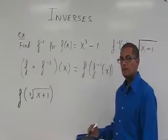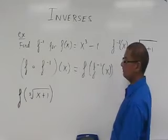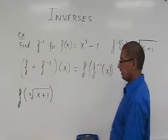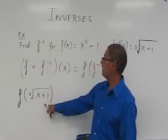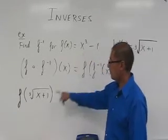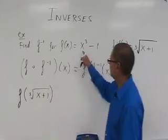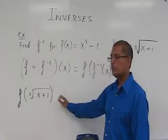Well we are going to have f of the cube root of x plus 1 because that is the inverse function, cube root of x plus 1. And what that says now is substitute this cube root of x plus 1 into my original function for x. So in other words we are going to cube this because it says x cubed. We are going to cube this and subtract 1. So this is what we get.